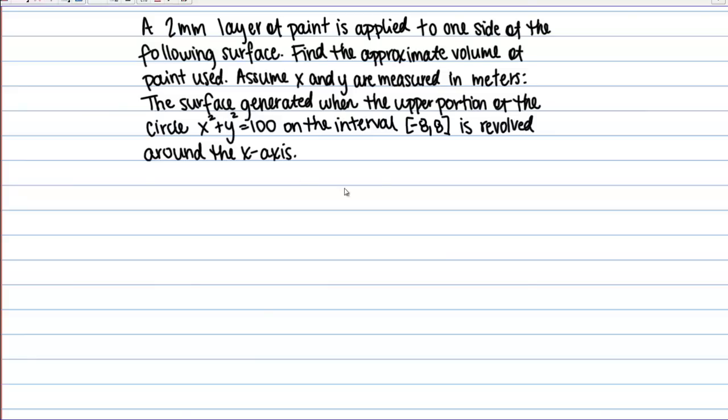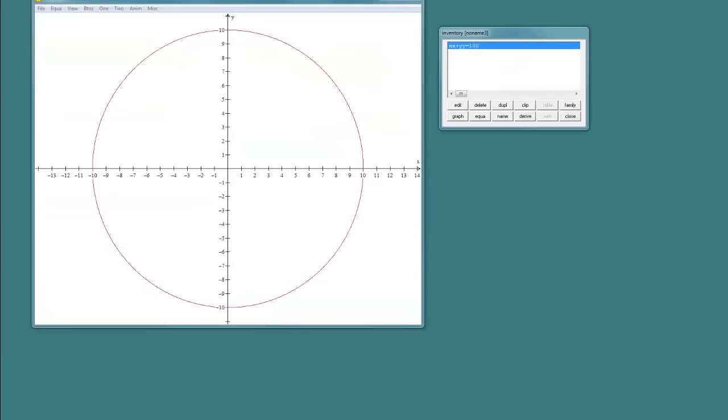So let's begin with a quick glance at the circle that's being described here. Here's my circle. This is X squared plus Y squared equals 100.